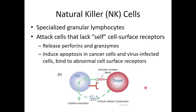Once natural killer cells identify a non-self cell, they release perforins and granzymes to induce apoptosis — particularly in cancer cells and virally infected cells — and bind to abnormal cell surface receptors. If a normal cell has an abnormal surface receptor, that could be a recipe for autoimmunity. NK cells are also responsible for rejecting transplanted organs, which is why people who receive organs are on immunosuppressants for the rest of their life — even a perfect match still isn't self.